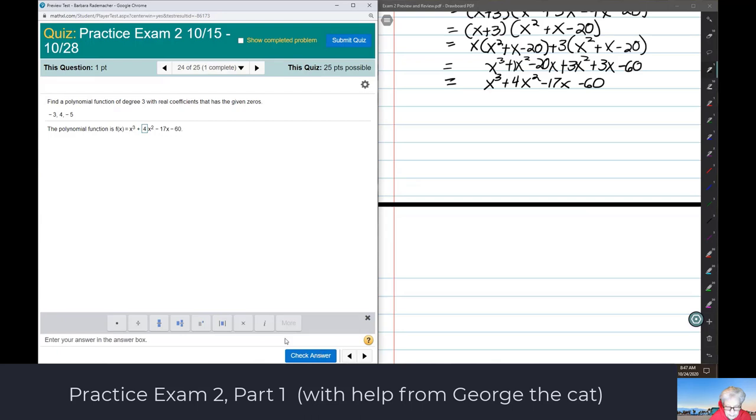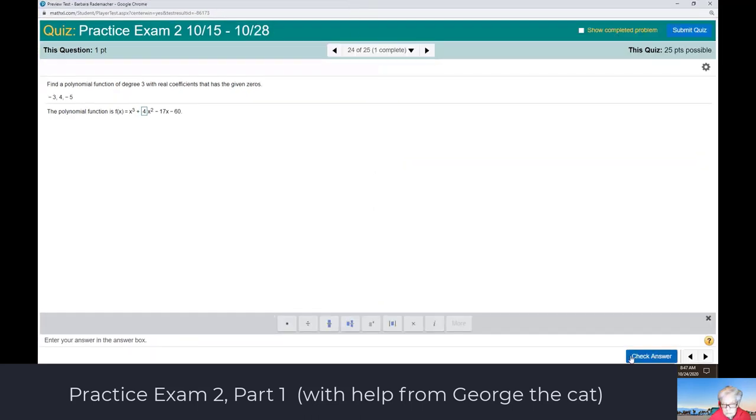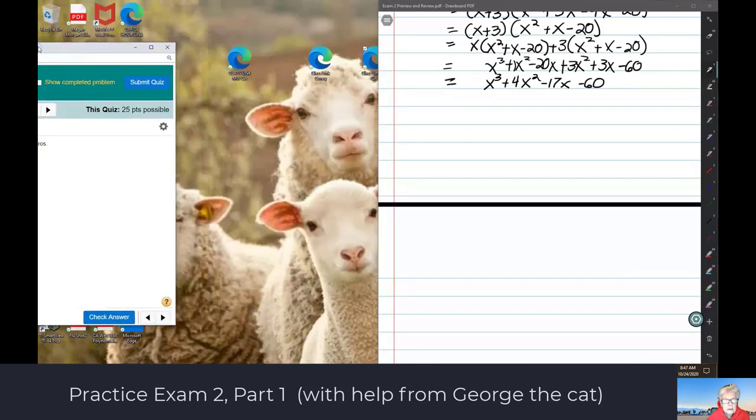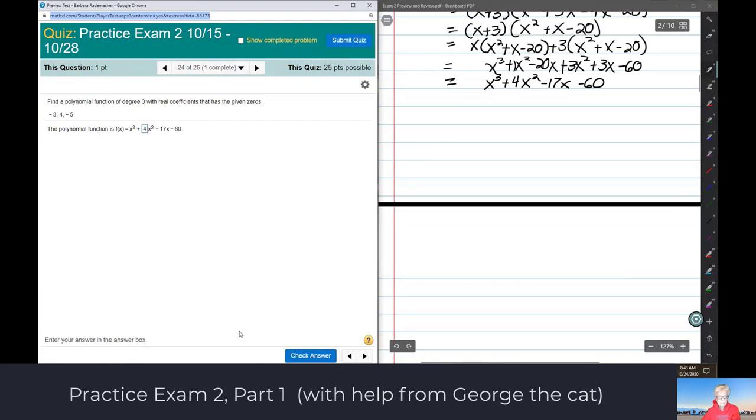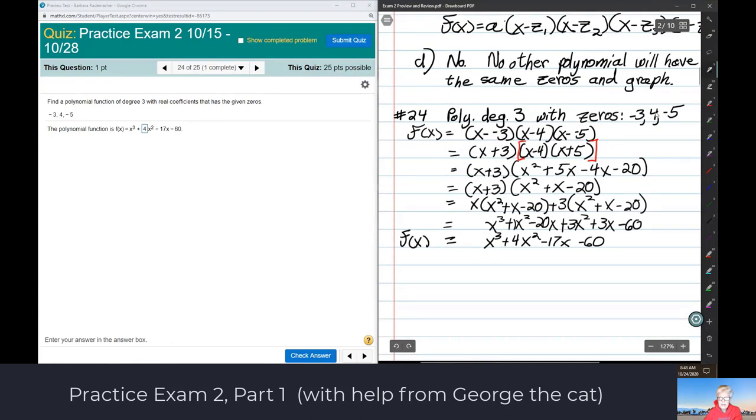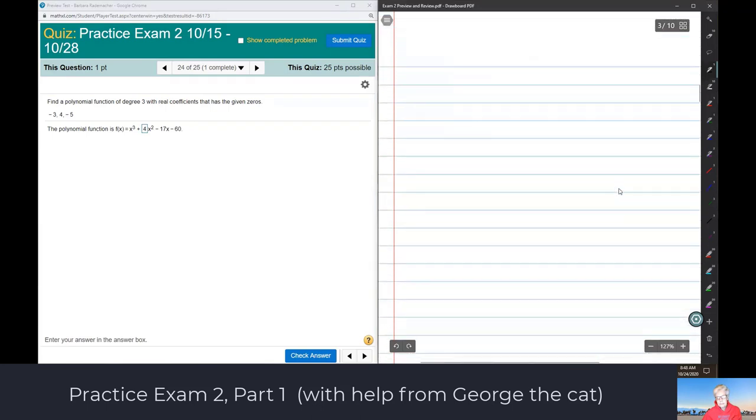So I'll distribute the x, I'll get x to the third plus x squared minus 20x plus 3x squared plus 3x minus 60. And then combine like terms. I'll have x to the third or x cubed plus x squared, 1x squared plus 3x squared. That's 4x squared. Minus 20x plus 3x is minus 17x minus 60. And that's, so 4. 4 is the number that would go in there, I hope. Now, is it a coincidence that that number is 4 and that number is 4? And the answer is yes. It is a coincidence. Probably would never happen again in a million years. So you can't just say, well, it's the middle one. No, it's not.